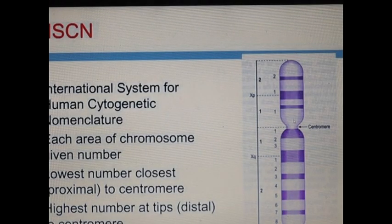These banding patterns are very important based upon international system for human cytogenetic nomenclature. Each area of chromosome is given a number. The numbering is done in such a way that the area which is near the centromere are numbered the least like 1, 2, 3 we can see and the area which is away from the centromere are the highest numbers.